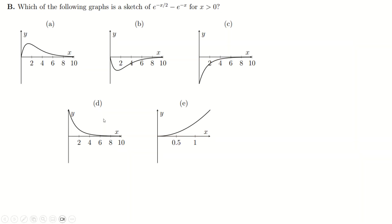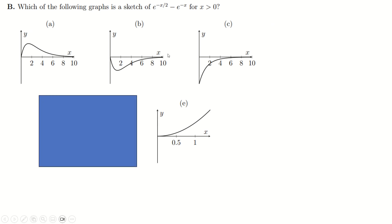So that's part A done. For B: at x = 0 you have e to the power of 0 minus e to the power of 0, which is 1 minus 1, which is zero. So the graph starts at zero, which means D is gone. If x becomes really big, you have e to the minus a massive number, which is basically zero, minus e to the minus a massive number, which is also zero. So zero minus zero is zero — that means E is gone.